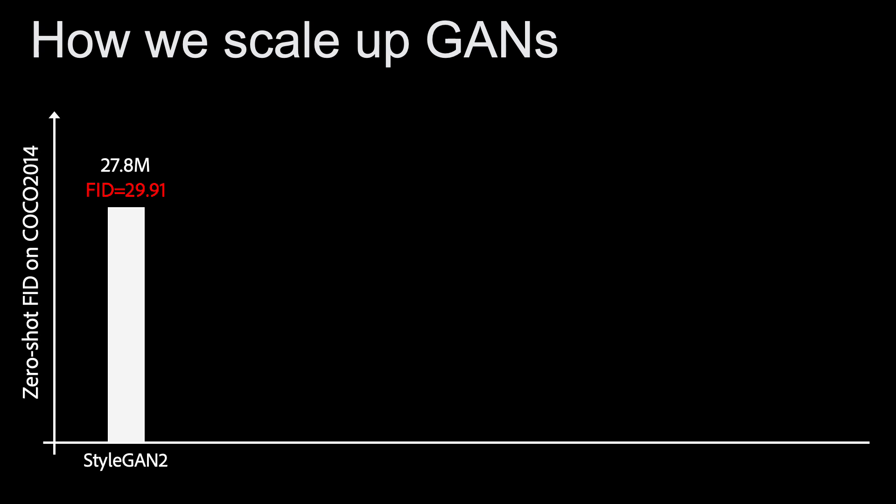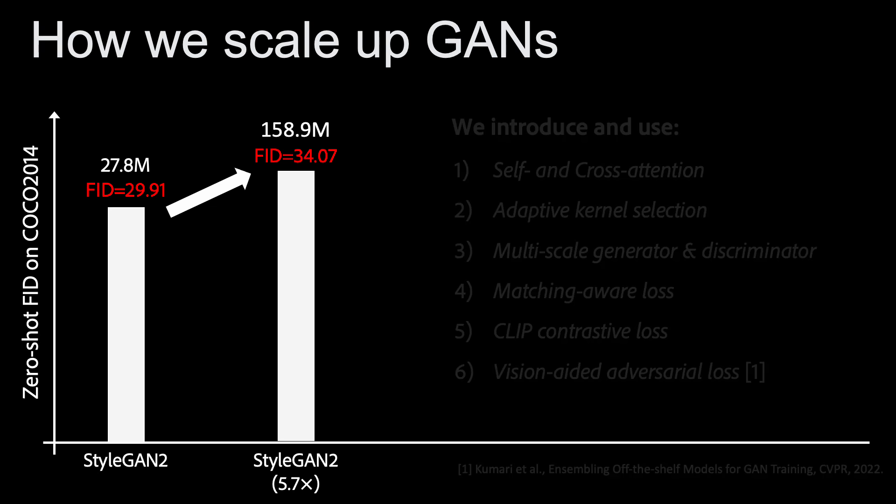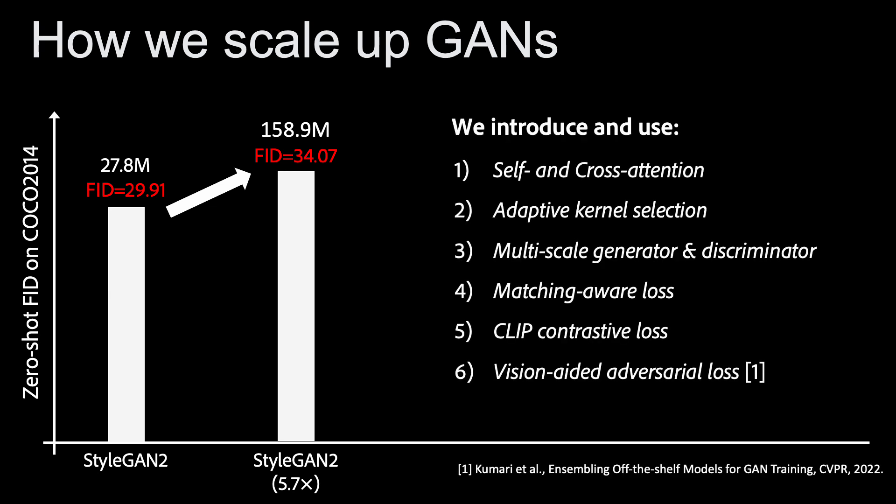We began our research with StyleGAN2, modifying the conditioning part. We tried to directly scale up StyleGAN2 by increasing its depth and width. However, simply increasing the model capacity did not lead to better results. To scale up GAN efficiently, we used and developed the following six modules.